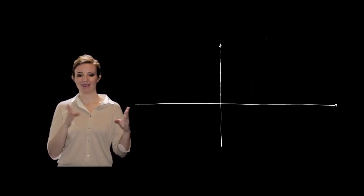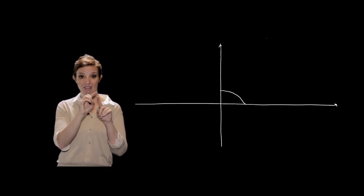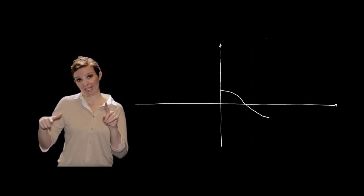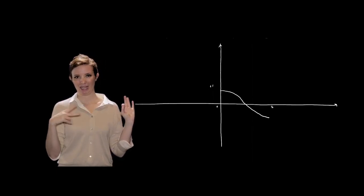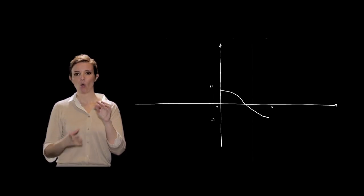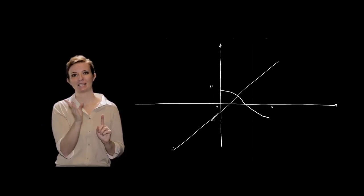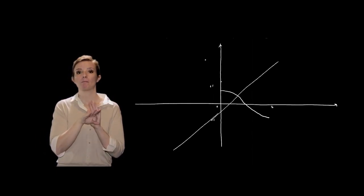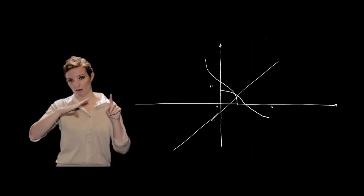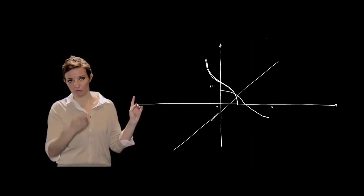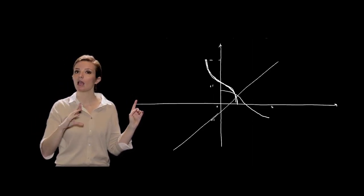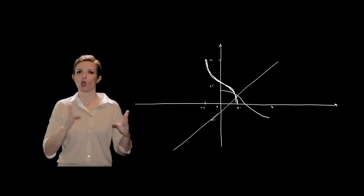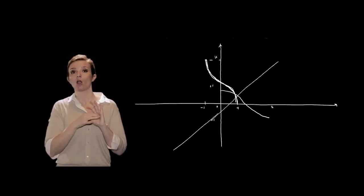Vediamo come rappresentare la funzione arco coseno sul piano cartesiano. L'intervallo del coseno è tra 0 e π, con valori +1 e −1. Usando la bisettrice, la funzione arco coseno parte dal valore +1 e decresce fino a −1, con dominio [−1, 1] e codominio [0, π].